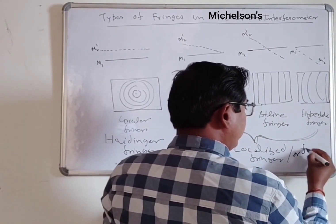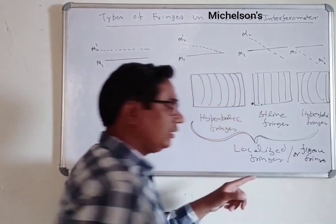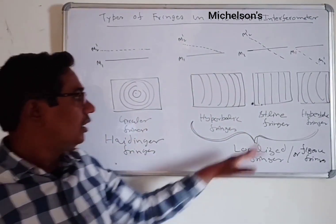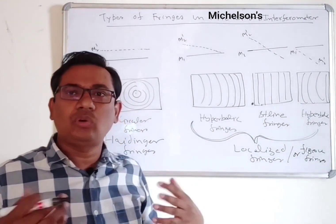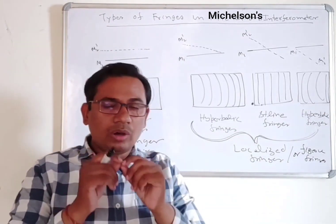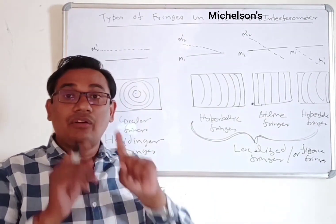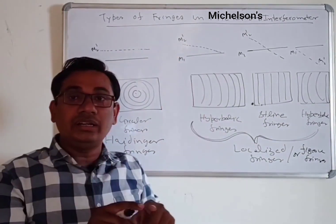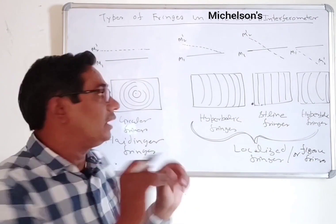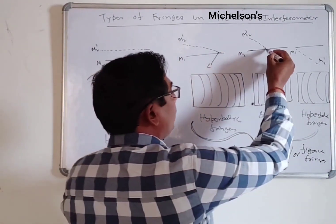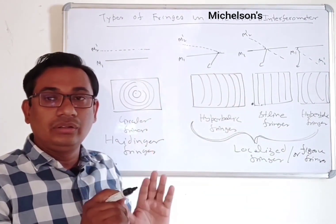These wedge-shaped fringes are also called Fizeau fringes, while Haidinger fringes are the circular ones. All of these are localized fringes. Localized means that fringes are observed at a particular point. When fringes are observed at all points it is called delocalized fringes, but here we observe fringes at specific points.